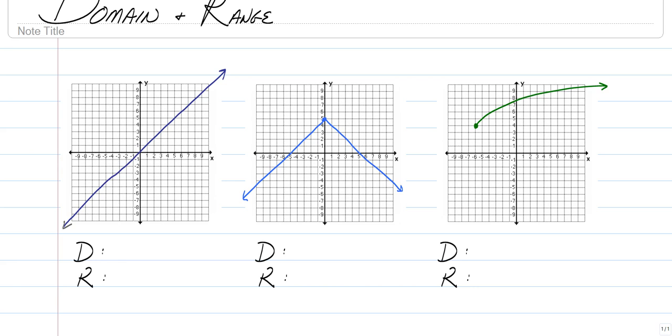So domain is your x values. And when you're talking about domain, you want to think of going to the left and going to the right. What is your graph doing left and right? And range is your up and down, or your y values.